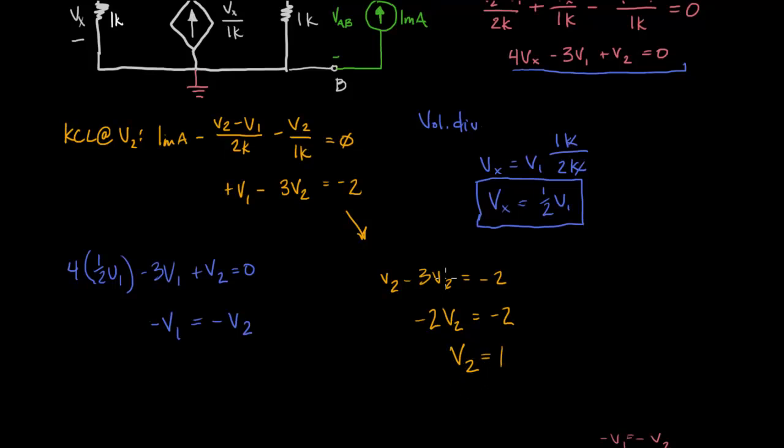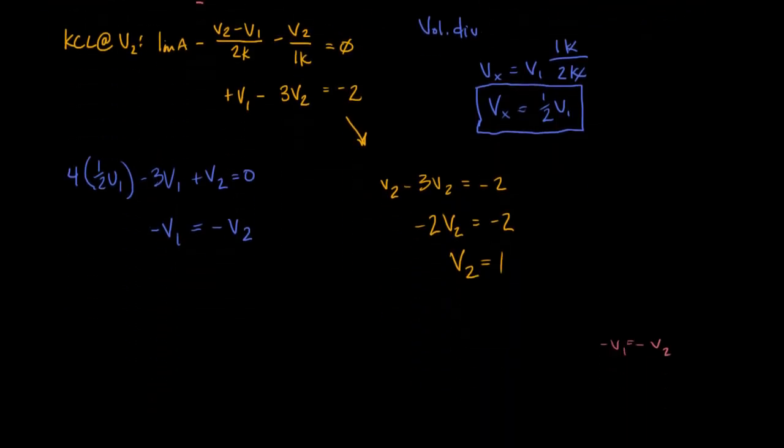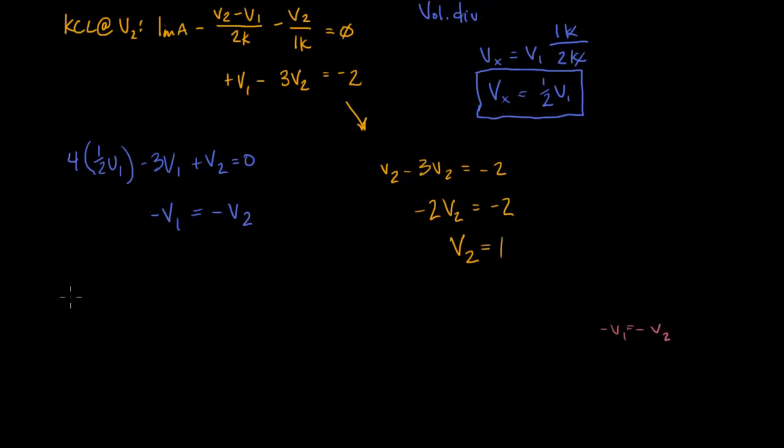So, we now have V2, and remember that V2 is equal to VAB, same thing. So, now we've solved for the voltage, and we have the current, which we chose. So, we get R-thevenin is equal to V over I, which is equal to one volt over one milliamp, and that will then equal 1,000 or 1K ohms.